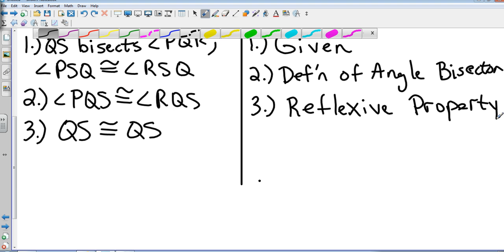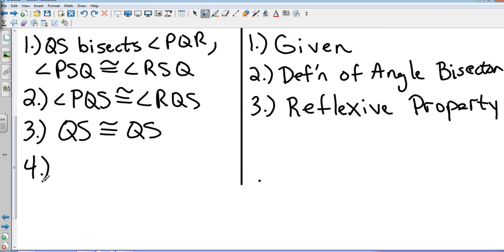So we now have two sets of angles, we have the included side, so we are good to go on our proof. In step four, that's going to give us triangle PQS is congruent to triangle RQS because of, and again you don't have to write the entire paragraph, we are just going with Angle Side Angle.